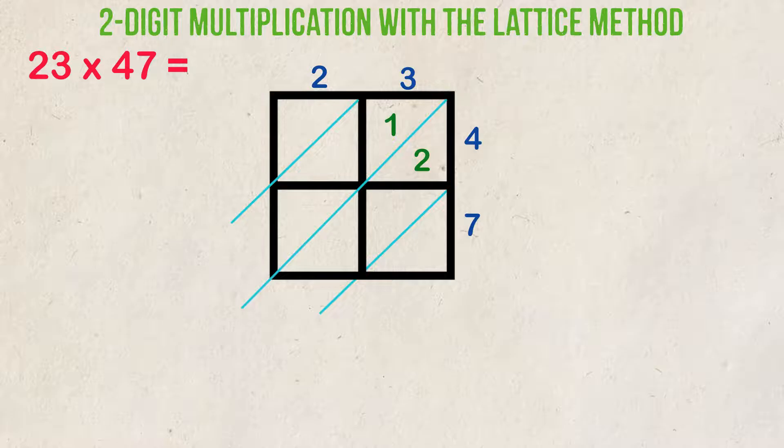Next, we multiply 3 times 7. That result is 21, and just as we did before, let's put 2 on this side and 1 on this side. So that's the first column done.